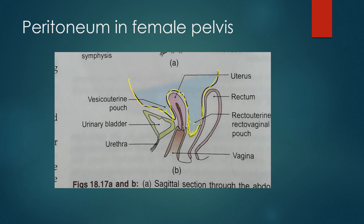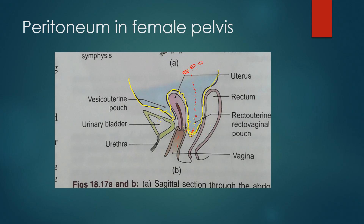The rectouterine pouch is the most dependent part of the pelvic cavity. If there is any blood or hemorrhage in the greater sac, it is going to trickle down and collect here in the pouch of Douglas. This rectouterine pouch is also known as the pouch of Douglas. If there is an ectopic pregnancy — pregnancy outside the uterus — it may get ruptured, and once ruptured the blood will collect here. That can be felt by a finger in the rectum or by per vaginal examination. This is a very important clinical consideration in the female pelvis: the rectouterine pouch, or pouch of Douglas.